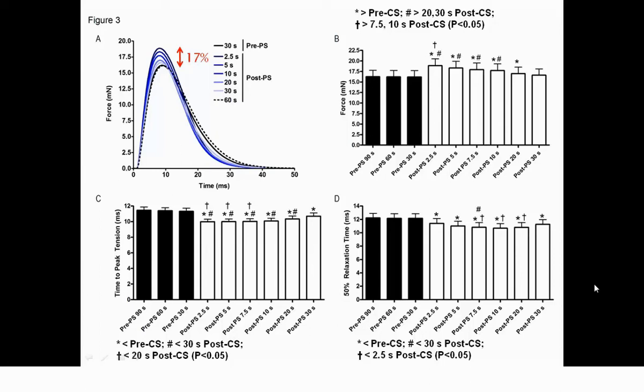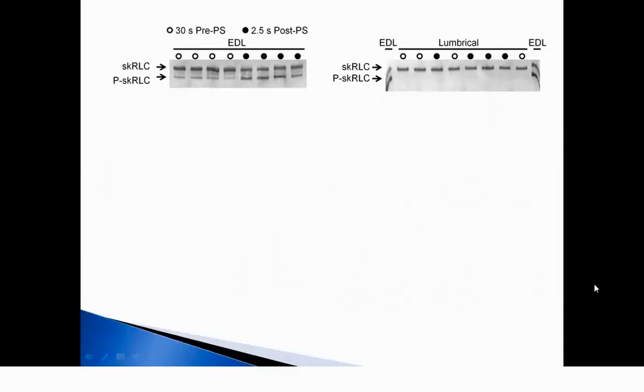For comparison, in extensor digitorum longus muscles, potentiation can last upwards of 10 to 20 minutes. Next, we examined regulatory light chain phosphorylation in EDL and lumbrical muscles. In the unpotentiated state, EDL muscles had low levels of regulatory light chain phosphorylation, and this increased following the potentiating stimulus.